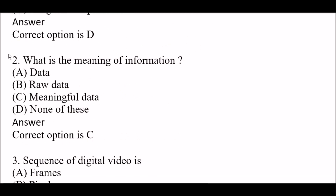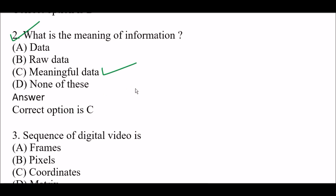Next question: What is the meaning of information? Option A: data, Option B: raw data, Option C: meaningful data, Option D: none of these. The answer is Option C — the meaning of information is meaningful data.